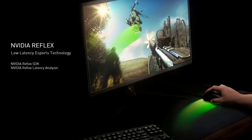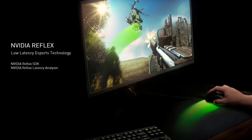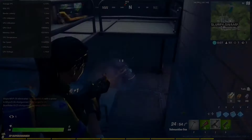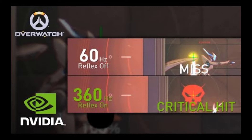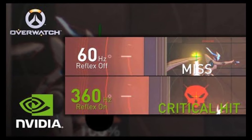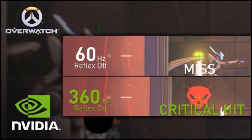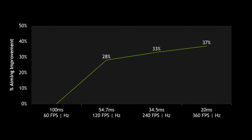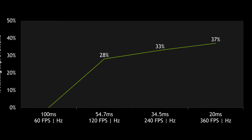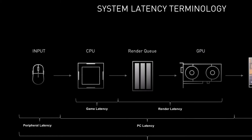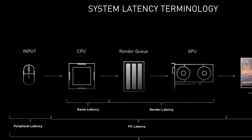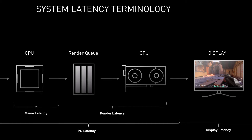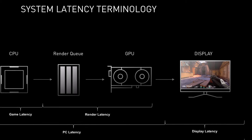The key innovation with NVIDIA Reflex is how it handles the render queue, which is basically a backlog of frames waiting to be rendered by your GPU. Traditionally, a long render queue causes delays, increasing overall latency. Reflex clears this queue by perfectly syncing your CPU and GPU operations. This means frames are prepped by the CPU and rendered by the GPU with almost no queue buildup whatsoever. So your PC reacts much quicker to your clicks and key presses, and reduced system latency translates directly into a more responsive, competitive gaming experience.